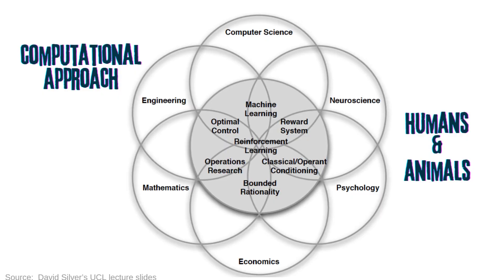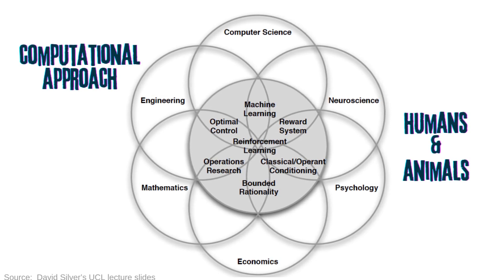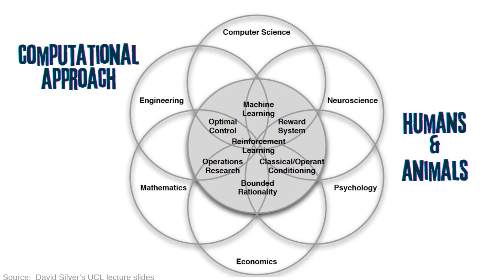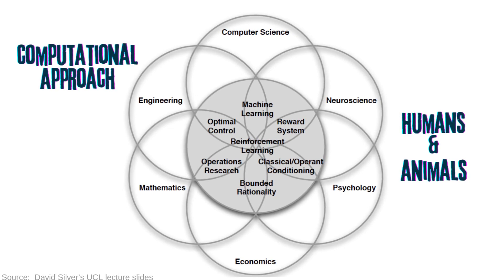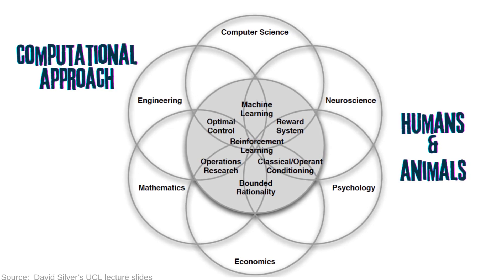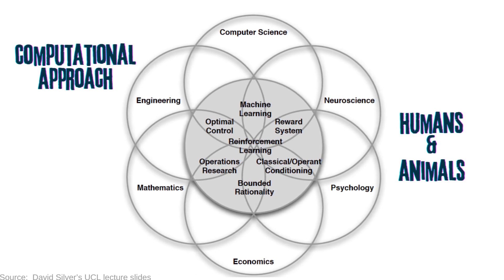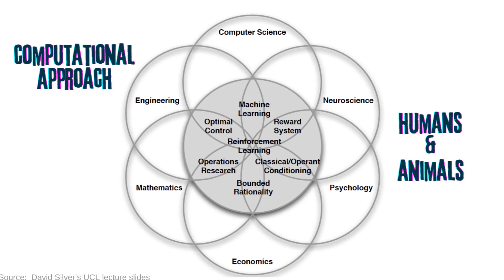Many computer science students don't realize that RL originated from human and animal psychology. It is the closest branch of AI to how biological beings actually learn. In fact, these concepts are so fundamental that many fields have converged into this area under different names. Here, we will be tackling RL using a computational approach: how can we build systems that can learn from their environment, guided by rewards, without the assistance of a human teacher?